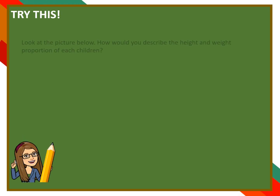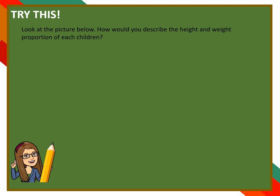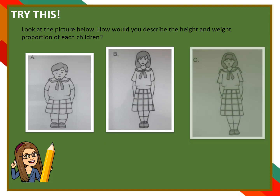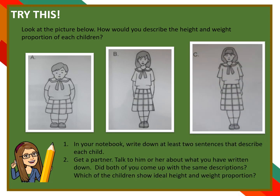Let's try this. Look at the picture below. How would you describe the height and weight proportion for each child? In your notebook, write down at least two sentences that describe each child. Get a partner and talk to him or her about what you have written down. Did both of you come up with the same descriptions? Which of the children show ideal height and weight proportion?